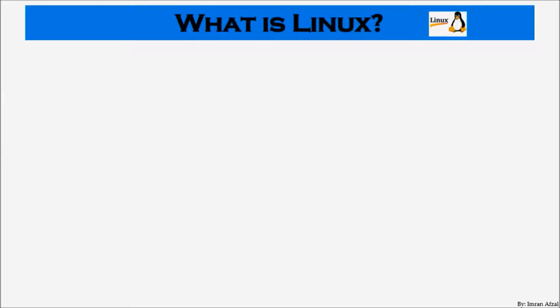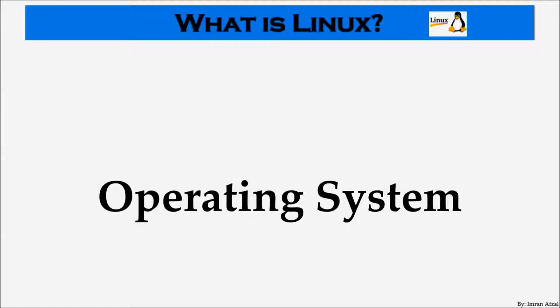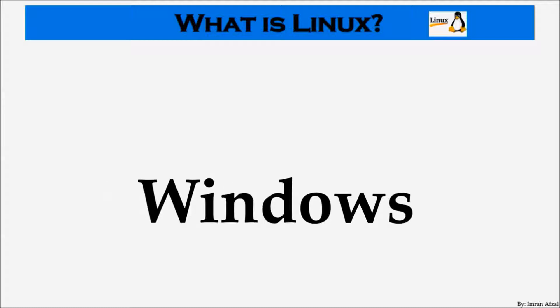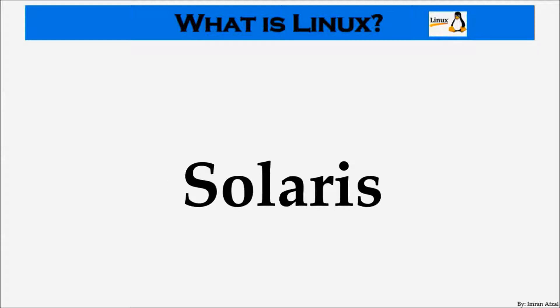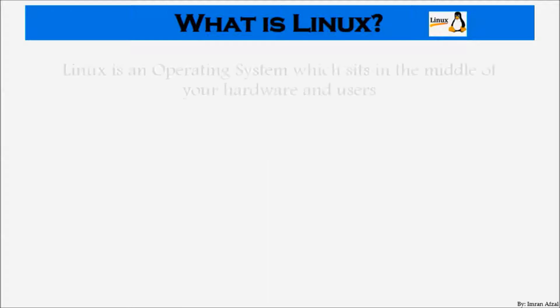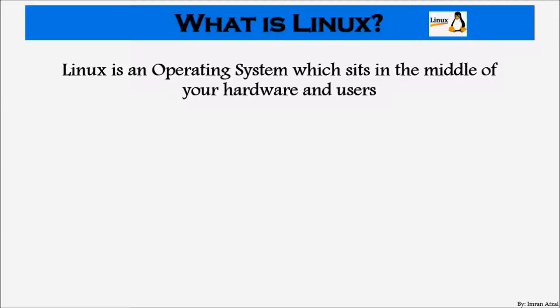What is Linux? Linux is an operating system, just like any other operating system. For example, Microsoft has Windows, Apple has Mac, and Sun (now owned by Oracle) has Solaris running on SPARC hardware. Linux is an operating system that sits in the middle of your hardware and the users, who run the applications. It's like a middleman or a bridge that takes commands from users and translates them to hardware.